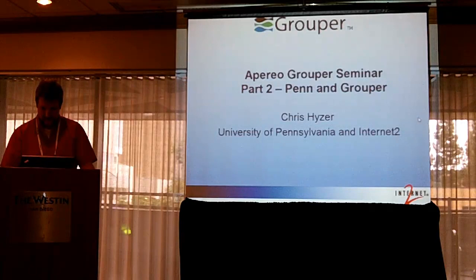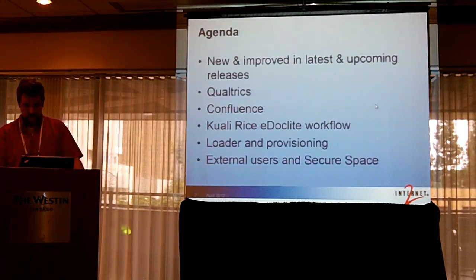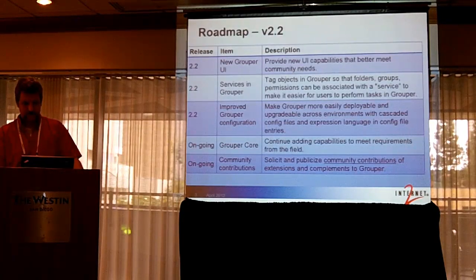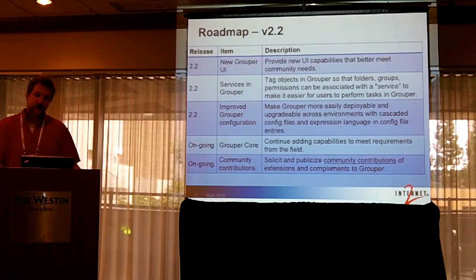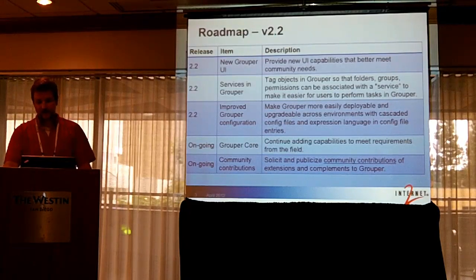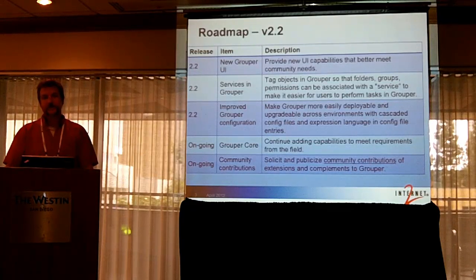This presentation talks about some of the new features in Grouper and some of the things we do at Penn. Version 2.2 is the upcoming release of Grouper — hopefully here by the end of the calendar year. We're going to have a new UI that'll be a lot easier to use. Something called services in Grouper — right now your apps are organized either in an app folder or delegated out to schools and centers. When a user comes to Grouper to manage, say, Confluence, they don't know which folder it's in. This is a way to tag a folder as a service so people can find it easily.